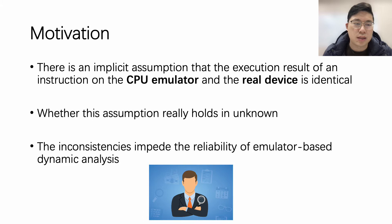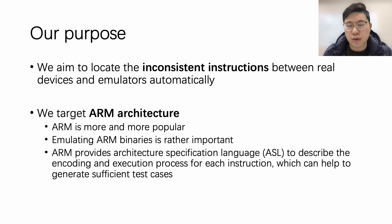In this case, we aim to automatically locate inconsistent instructions which behave differently between emulators and real devices. We target ARM architecture, as ARM is becoming more and more popular and emulating ARM binaries is rather important. More importantly, ARM provides an architectural specification language to describe the encoding and execution process for each instruction, which can help to generate sufficient test cases.